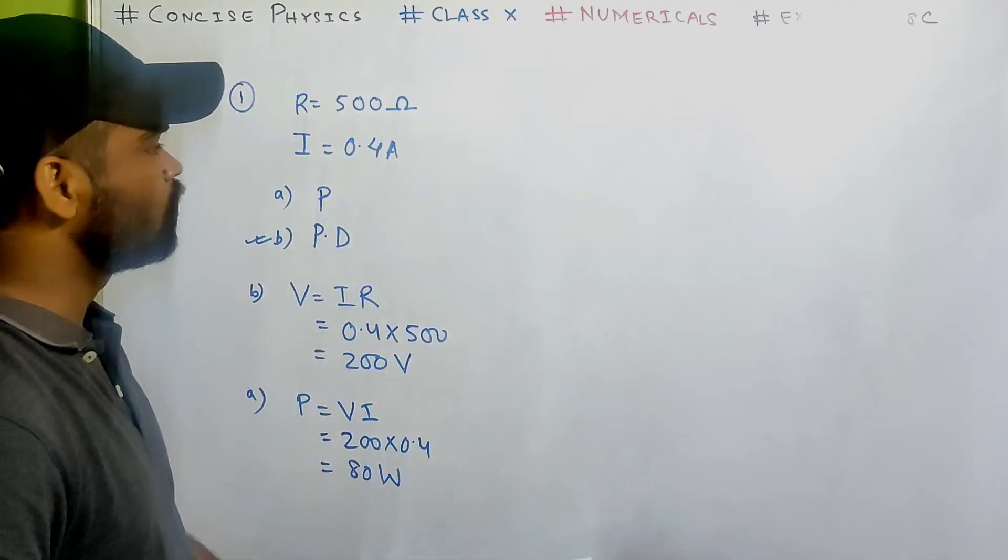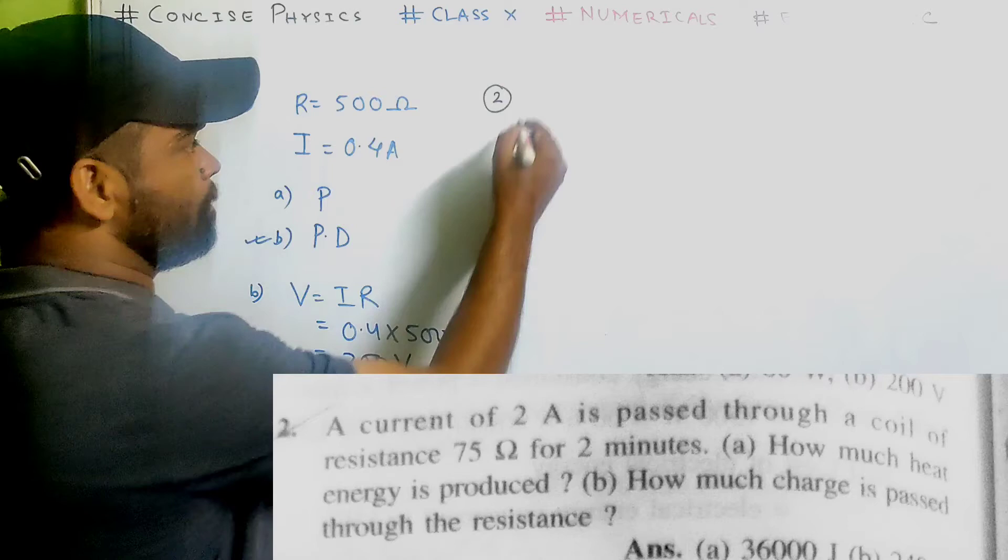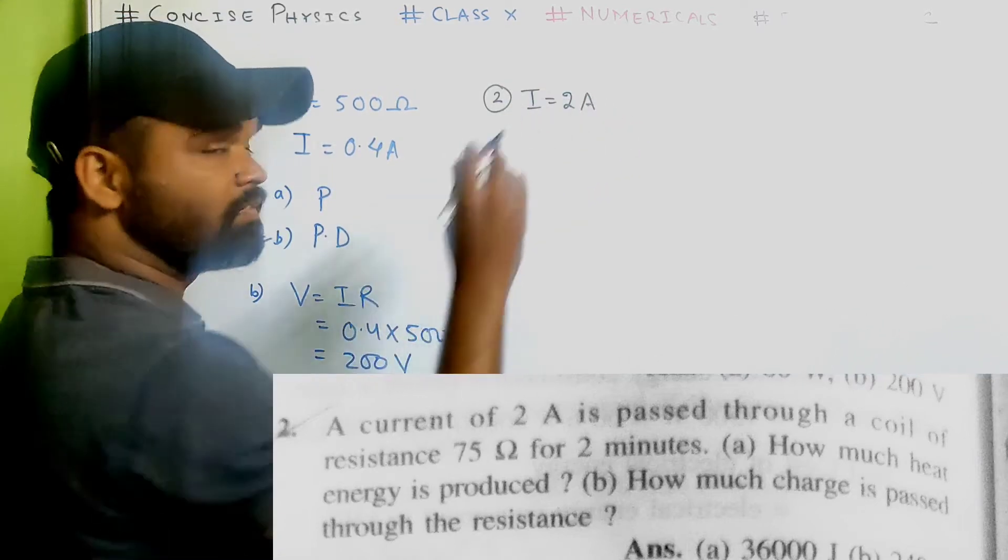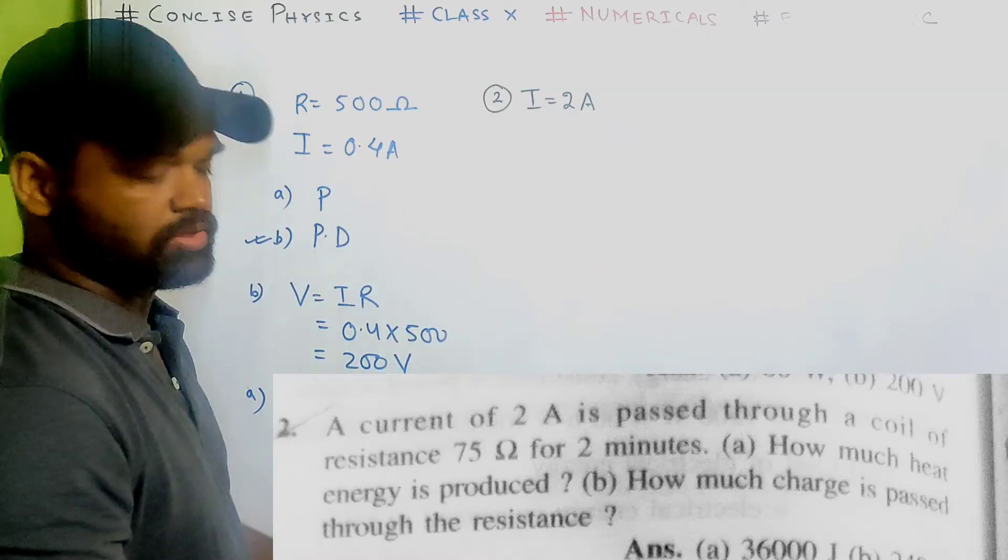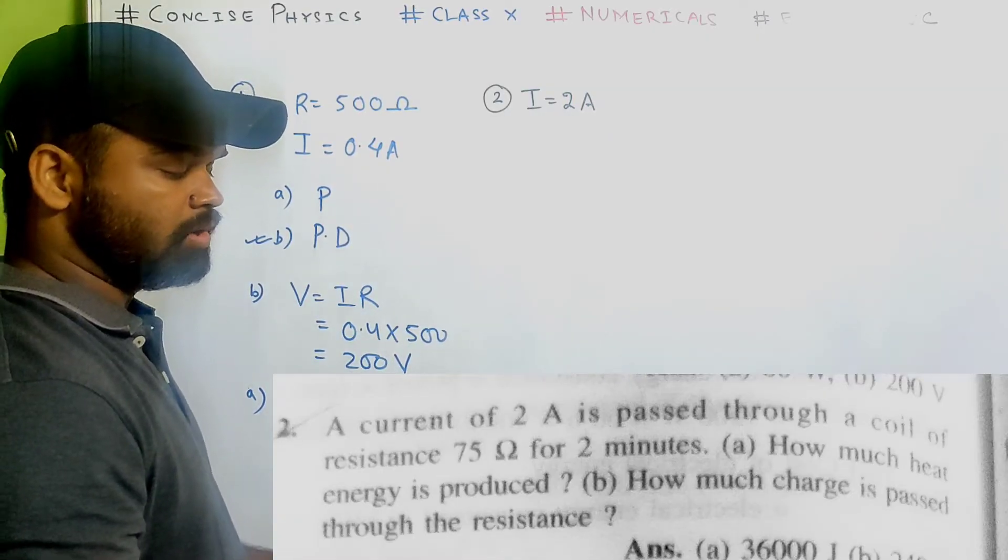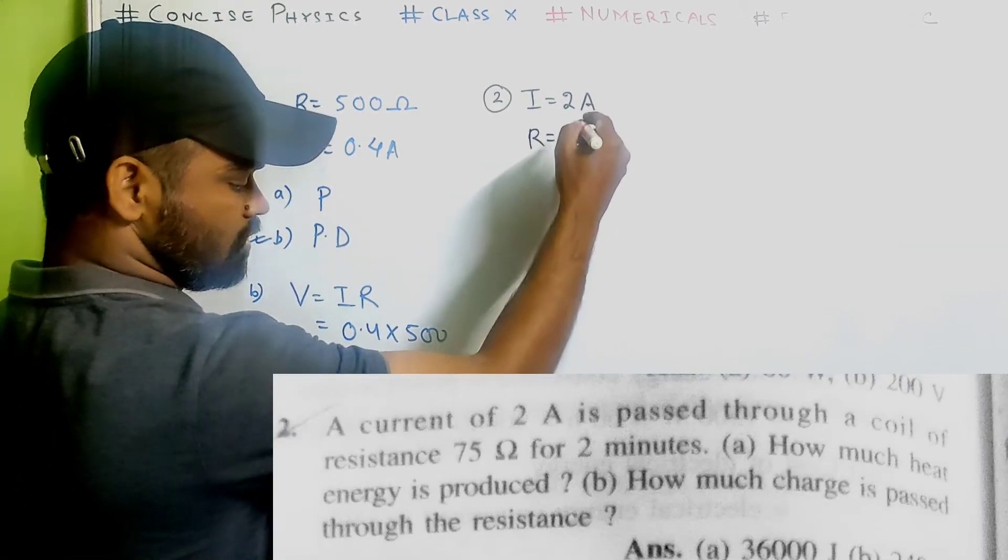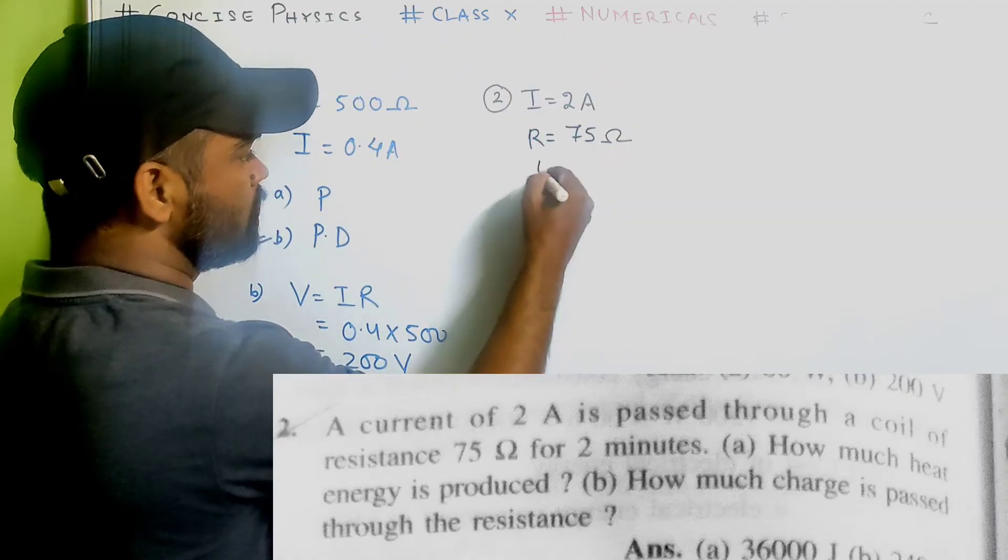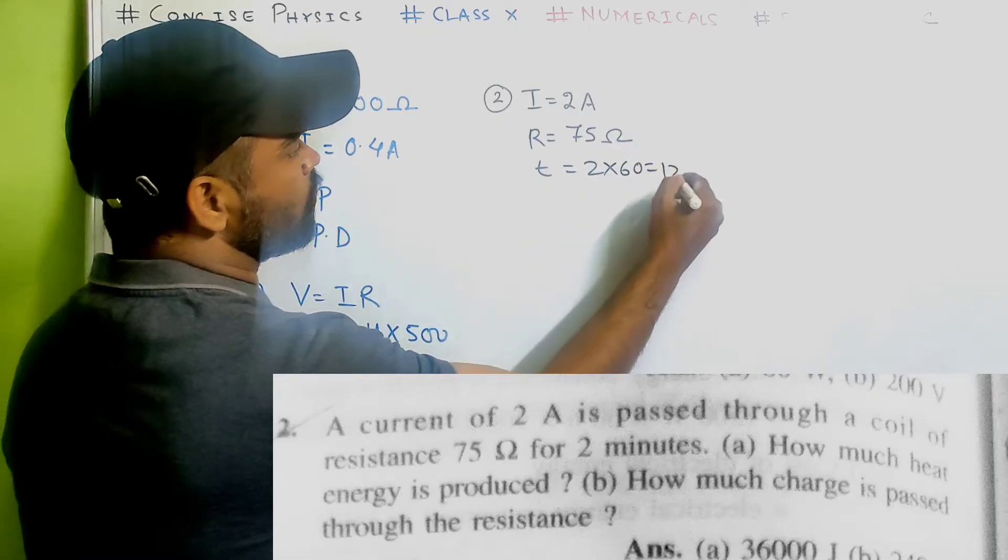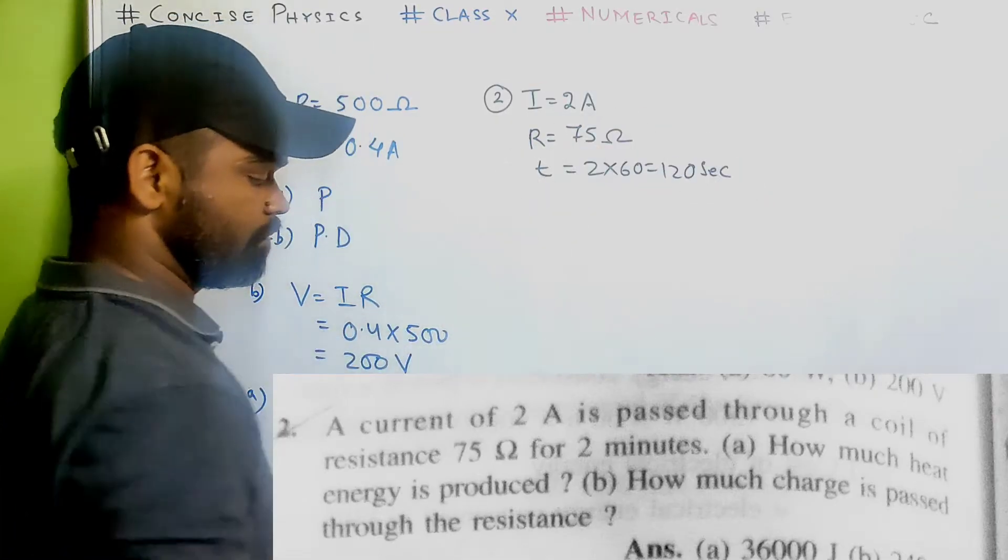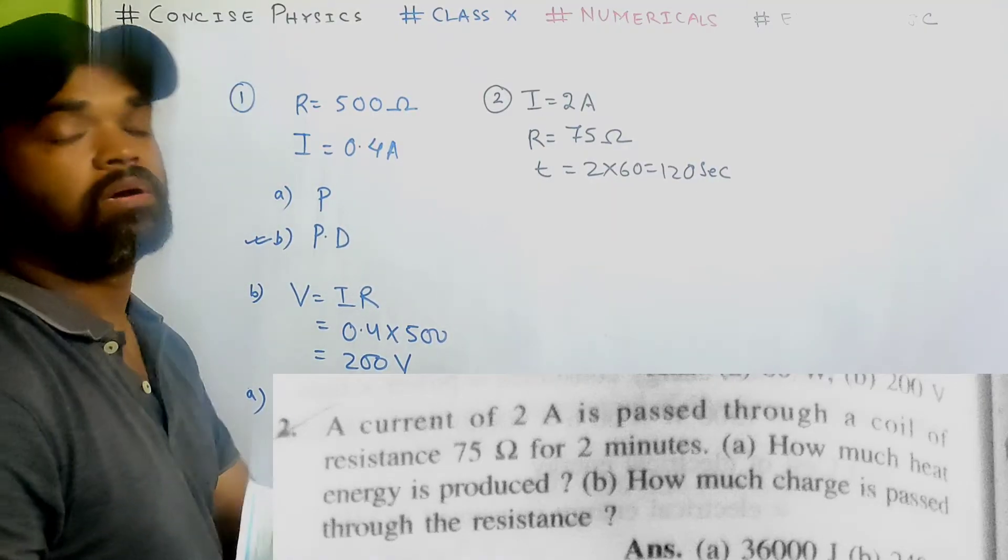We'll do number 2. First of all you need to write what is given in the sum and then try to correlate it with the formulas. A current of 2 ampere is passed through a coil of resistance 75 ohm in 2 minutes. 2 minutes means 120 second. How much heat energy is produced and how much charge is passed through the resistance?